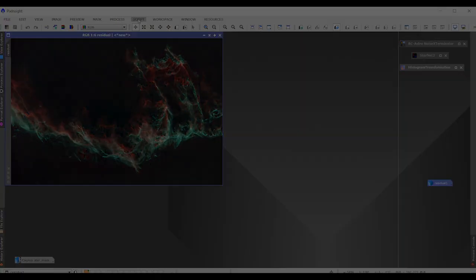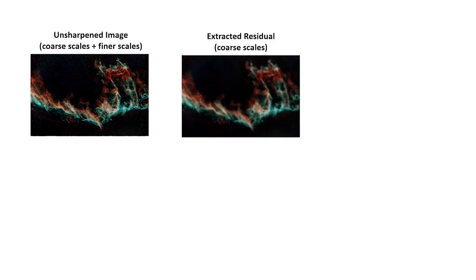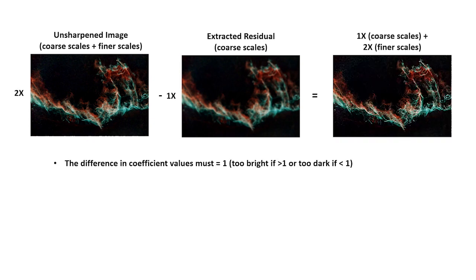So I'm going to call those layers four and five my coarse scale, layer three my medium scale, and layers one and two my fine scale. Now I want to talk about the workflow for sharpening the image. We start with the unsharpened image, which has coarse scales and finer scales. Then we're going to extract residuals three times: for the coarse scale residual we'll extract layers one through five; for the medium scale residual we'll extract layers one through three; and for the fine scale residual we'll extract just layers one and two.